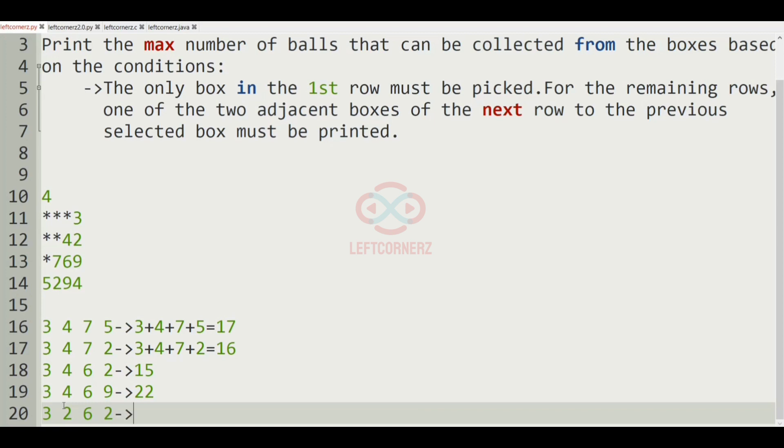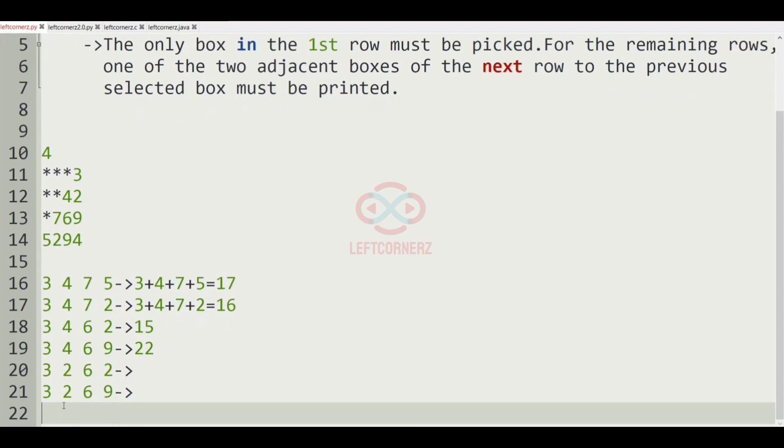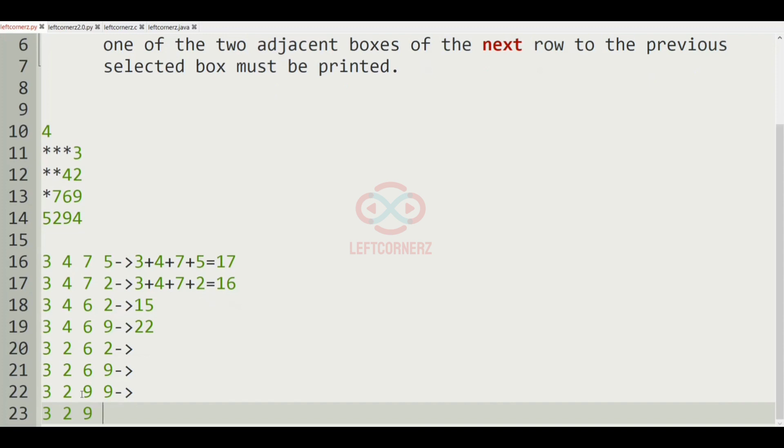So for the remaining numbers, it is 3 plus 2 plus 6 plus 2, and 3 plus 2 plus 6 plus 9, and then 3 plus 2 plus 9, and 3 plus 2 plus 9 plus 4. So these are the possible combinations. So here the sum is 13, and here it is 3 plus 2 plus 5 and then 9, 18, which is 23, and here it is 18.